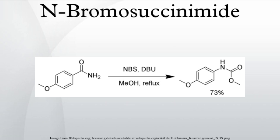Bromination of carbonyl derivatives: NBS can α-brominate carbonyl derivatives via either a radical pathway or via acid catalysis. For example, hexanoyl chloride can be brominated in the alpha position by NBS using acid catalysis. The reaction of enolates, enol ethers, or enol acetates with NBS is the preferred method of α-bromination, as it is high-yielding with selective products.